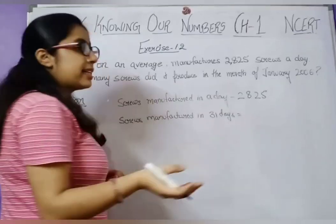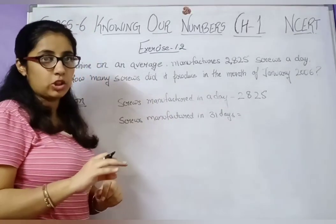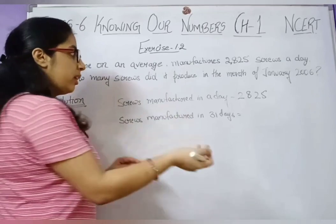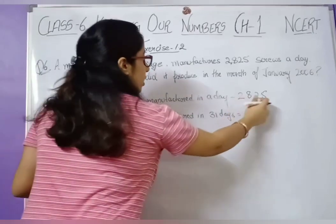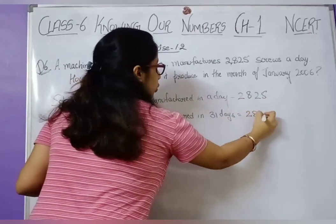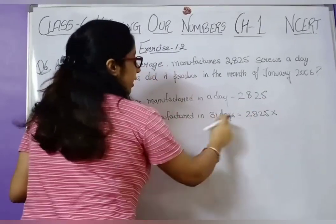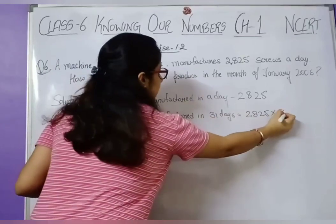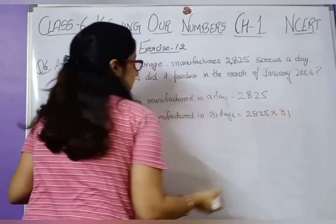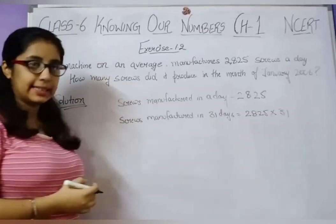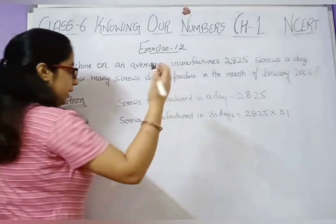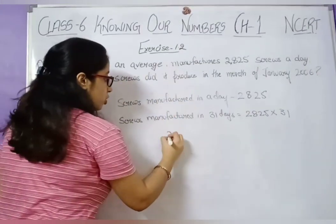In 31 days, how many will be manufactured? We will multiply 2,825 by 31 to get the answer. Let's multiply it.